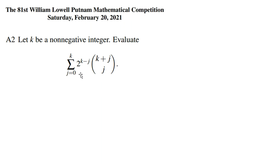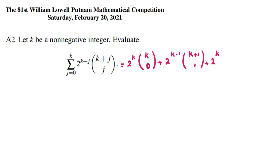When we want to work with this sigma, we can start by expanding it. If j=0, it is 2^k times (k choose 0). If j=1, it is 2^(k−1) times (k+1 choose 1). If j=2, it is 2^(k−2) times (k+2 choose 2). And so on — the last term when j=k is 2^0 times (2k choose k). We need to understand what this sum equals.